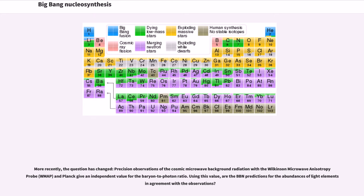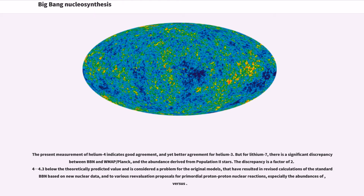More recently, the question has changed. Precision observations of the cosmic microwave background radiation with the Wilkinson Microwave Anisotropy Probe and Planck give an independent value for the baryon-to-photon ratio. Using this value, are the BBN predictions for the abundances of light elements in agreement with the observations? The present measurement of helium-4 indicates good agreement, and yet better agreement for helium-3. But for lithium-7, there is a significant discrepancy between BBN and WMAP/Planck, and the abundance derived from population II stars. The discrepancy is a factor of 2.4 to 4.3 below the theoretically predicted value and is considered a problem for the original models, that have resulted in revised calculations of the standard based on new nuclear data, and to various re-evaluation proposals for primordial proton-proton nuclear reactions.